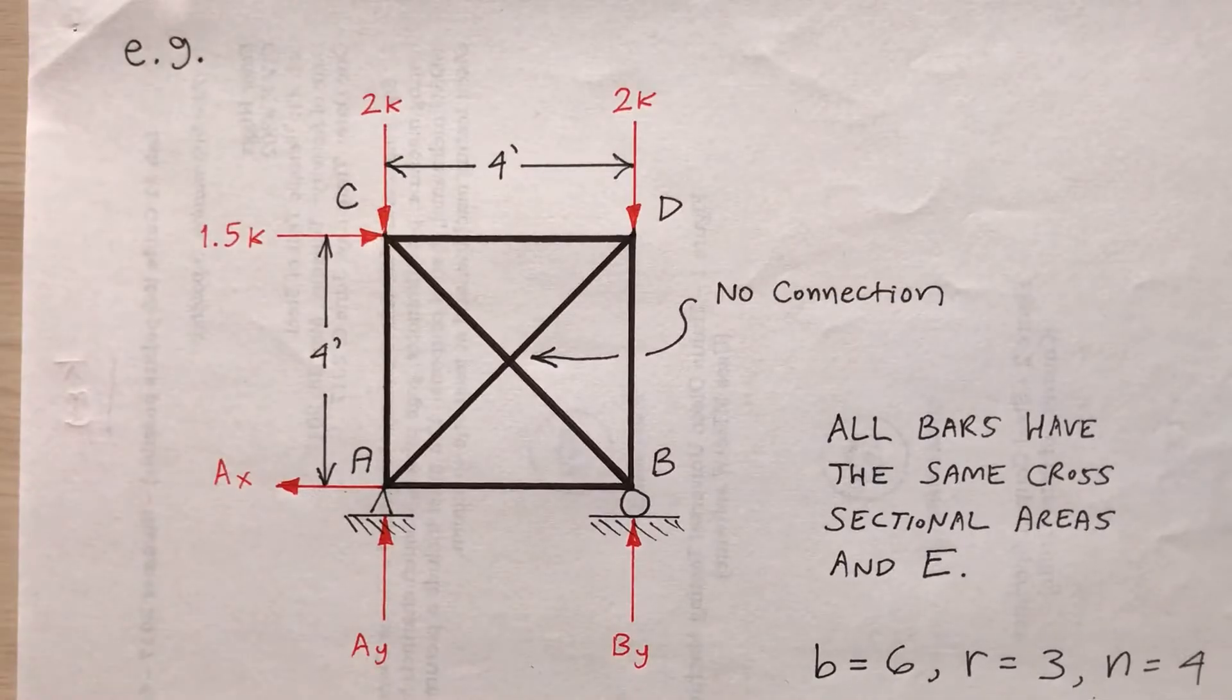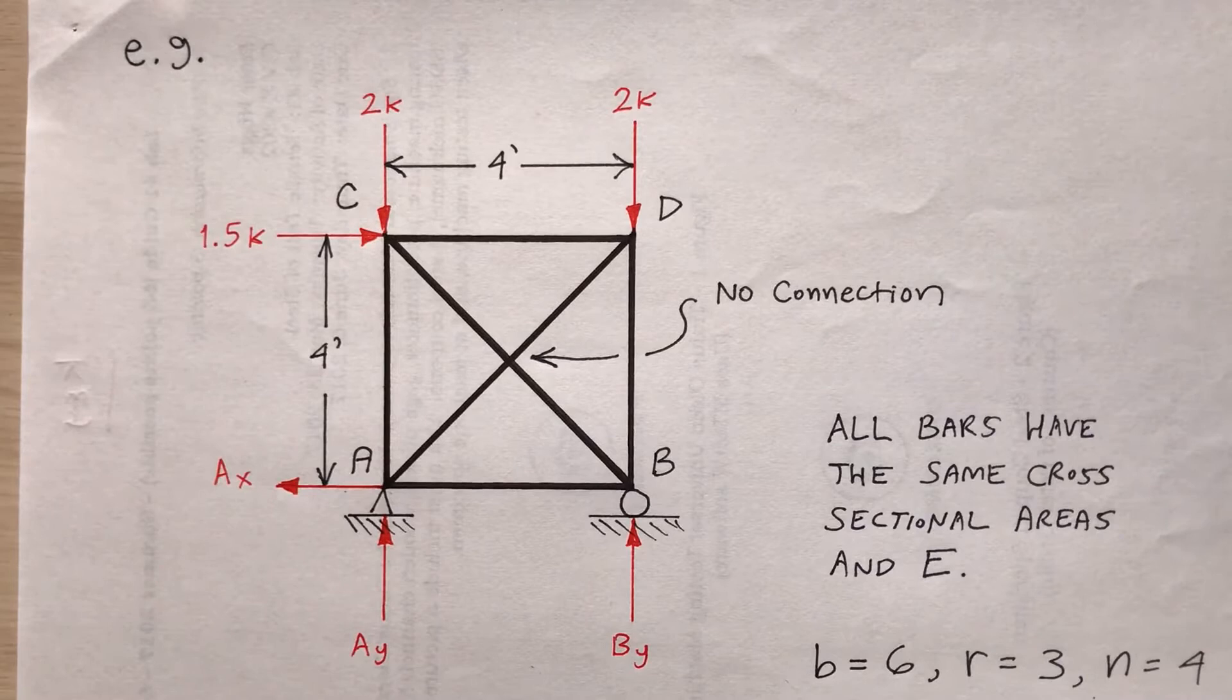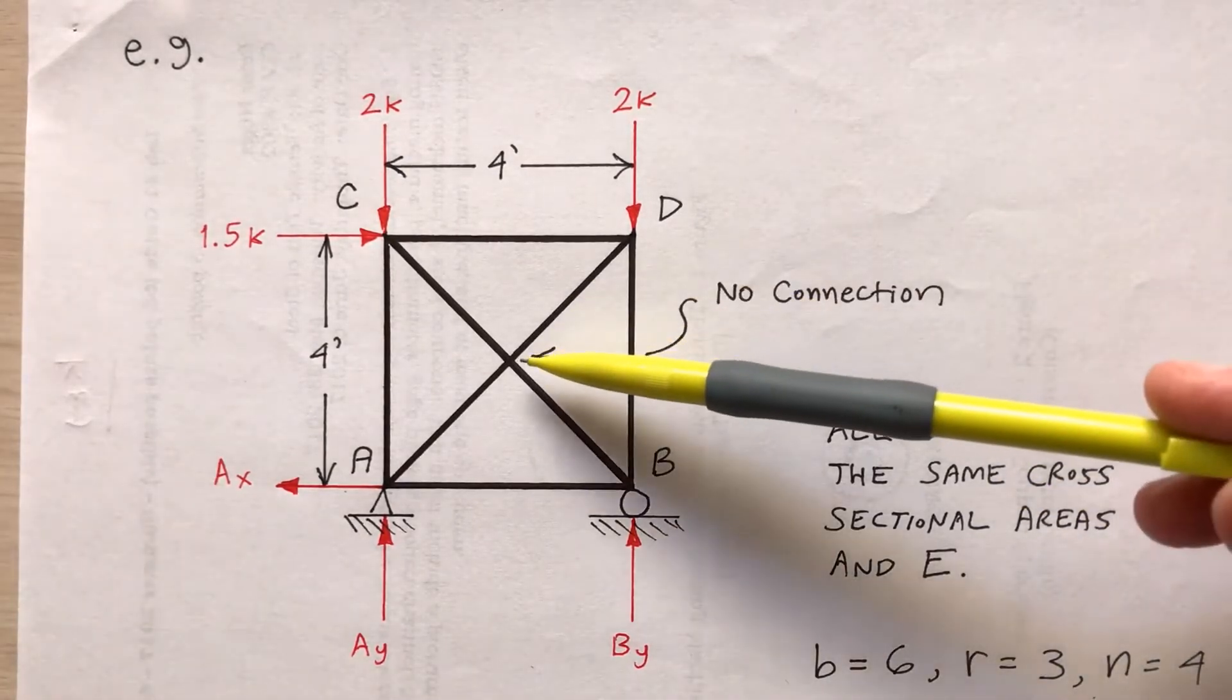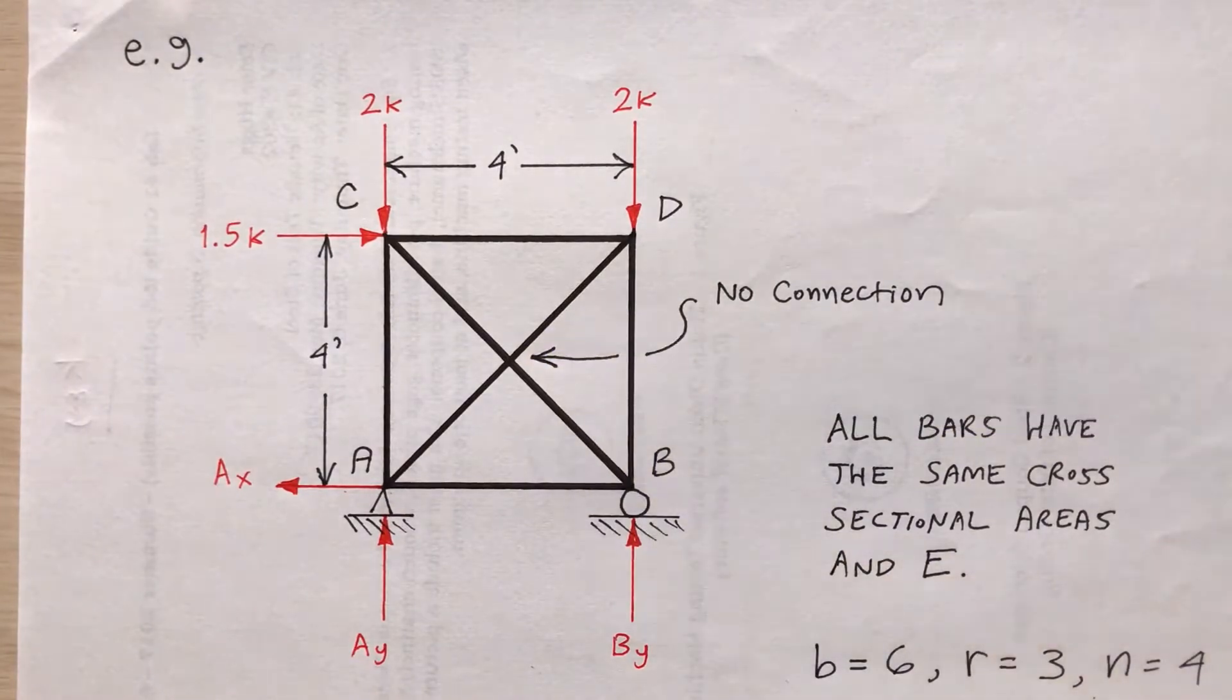So I want to do an example of a truss that's indeterminate internally. If it's indeterminate internally, that means that I'm probably able to determine all the external reactions, but I can't determine all the bar forces. Consider this truss, what looks like a square truss, four feet on each side.